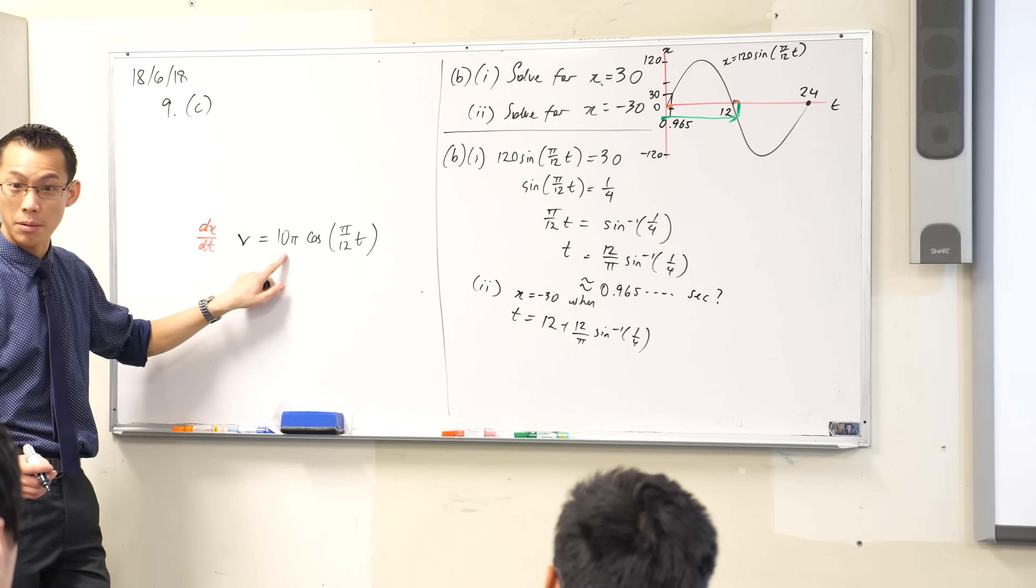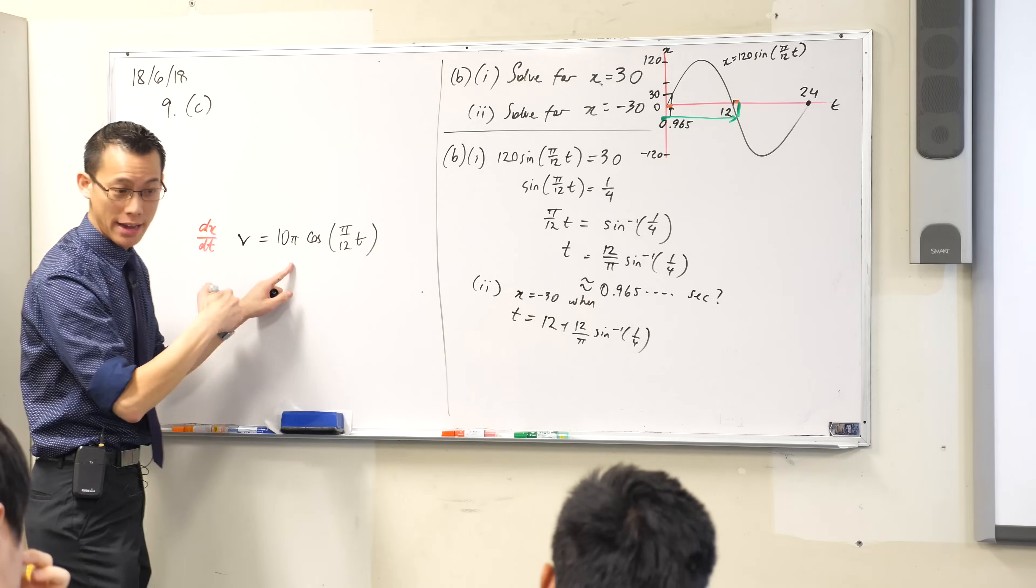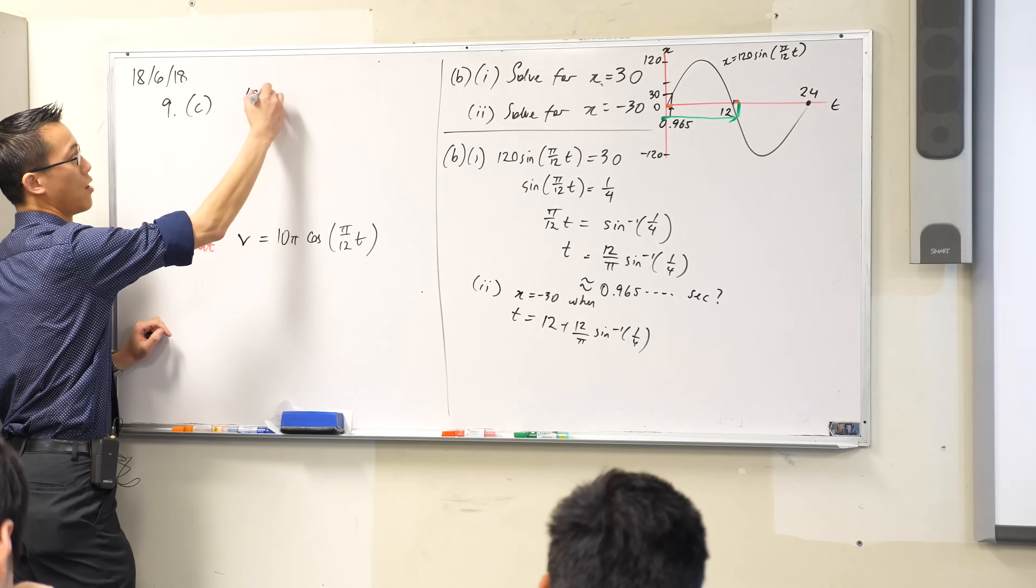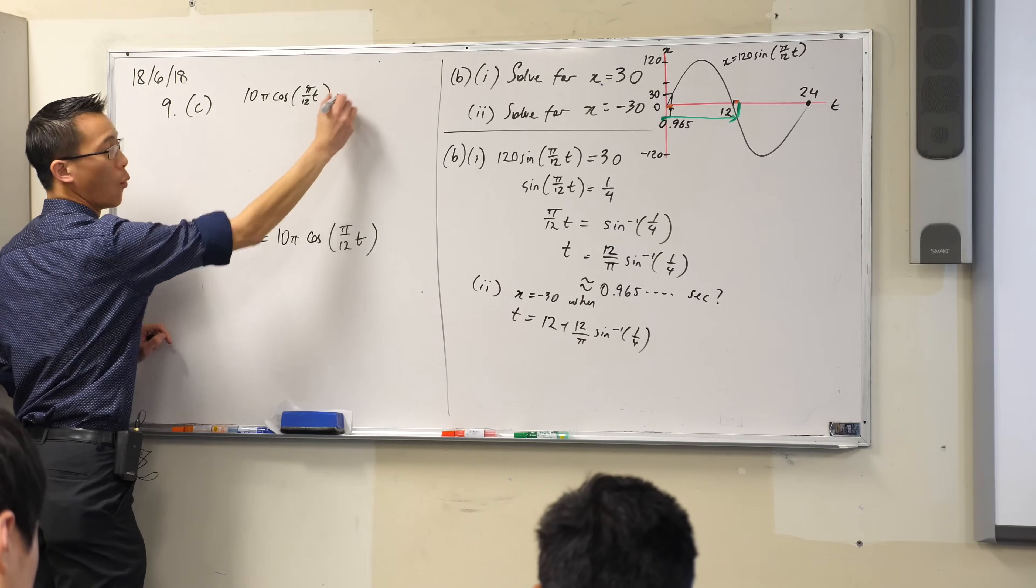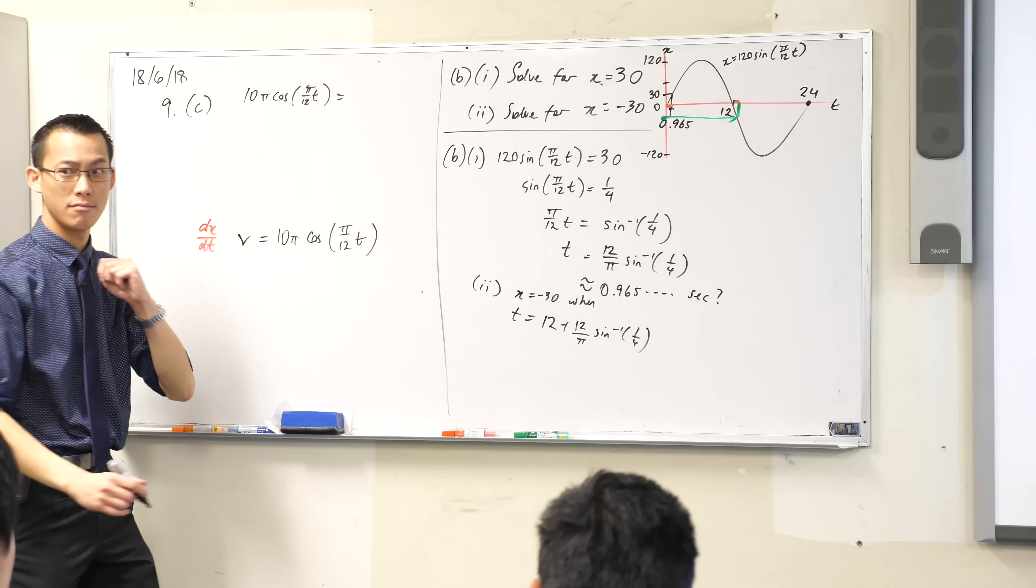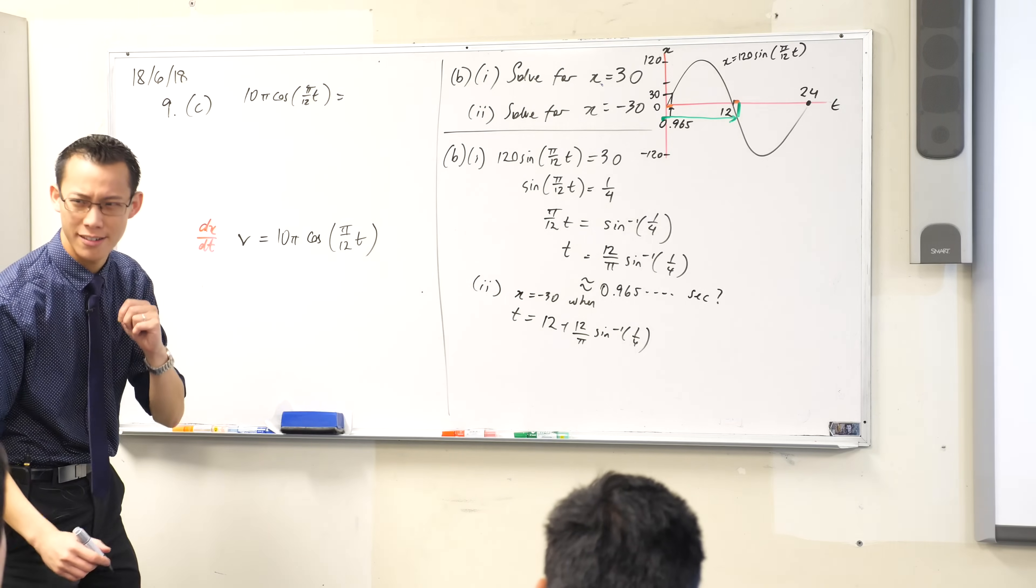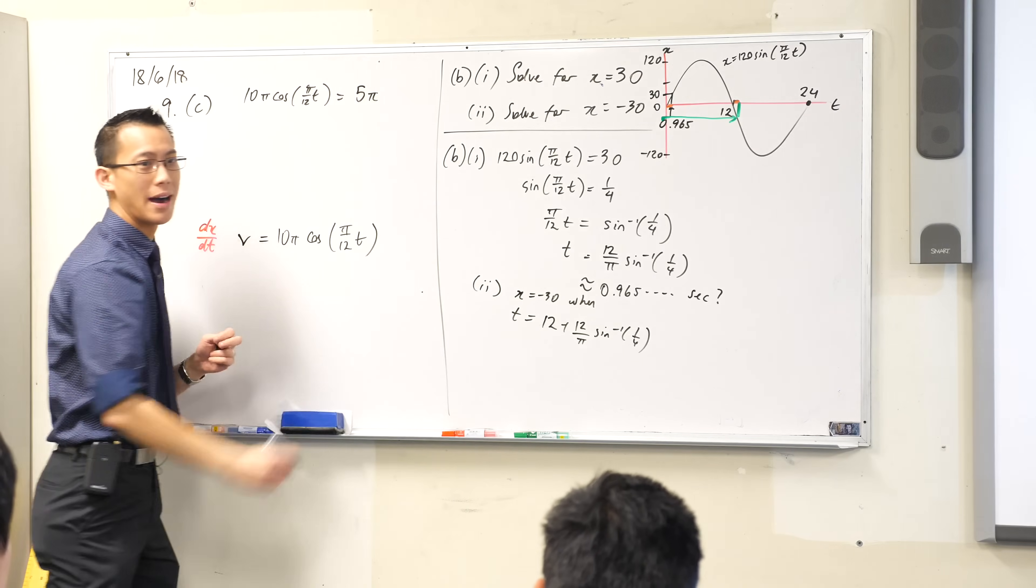You can just read it off. It's 10π. So I'm going to get on my way to finding the solution to this by saying, when is this, which is the velocity, when is this equal to half of that, which is, what was the maximum speed again? 10π, so half of that will be 5π.